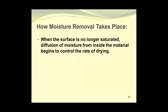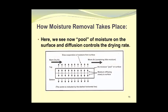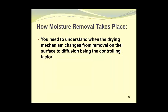When the surface is no longer saturated, diffusion of moisture from inside the material begins to control the rate of drying, and the rate decreases as more moisture is removed. Without a moisture pool on the surface, moisture diffuses slowly from the center to the surface, and the warm dry air picks up less moisture than before. The point where drying mechanism changes from surface removal to diffusion-controlled is called the critical moisture content.